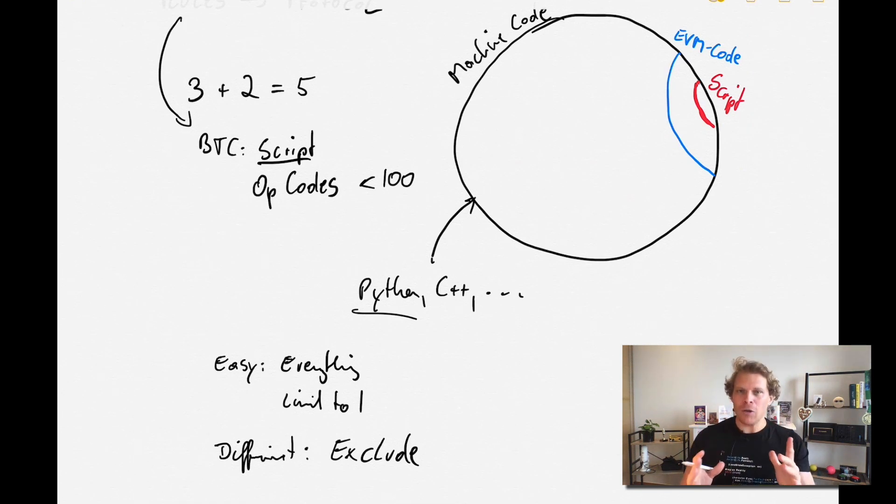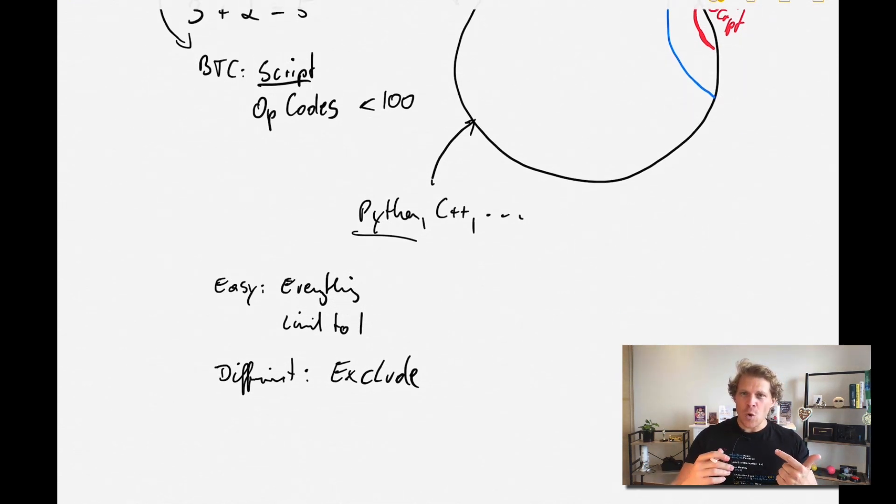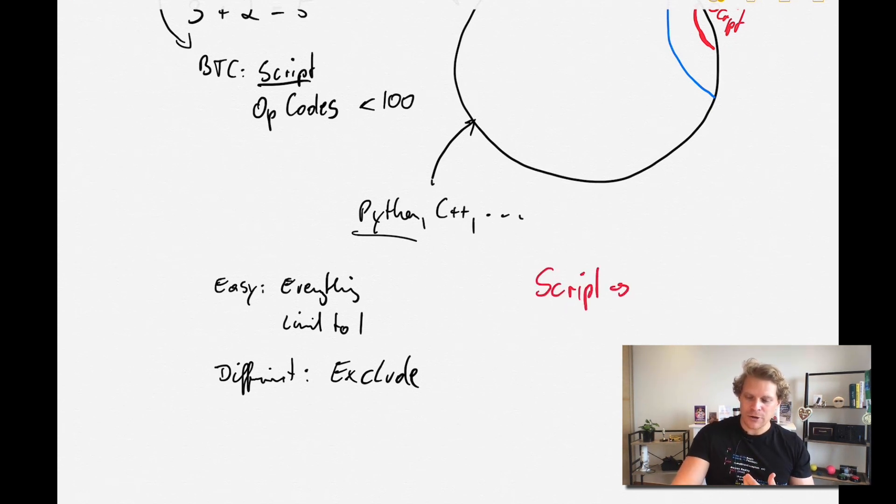And now what this means is the following, and this is the interesting conclusion of all this. If you want to run code in Bitcoin, you need to run this entire thing in Script. That is how you run it. But if you want to read it and verify it, you can use all these other languages. You can use Python, C++, and on Bitcoin now even JavaScript and so on, and they can all read and verify it.